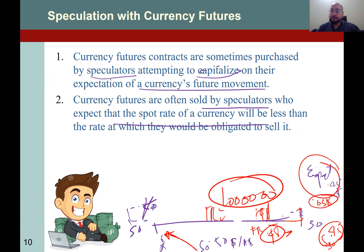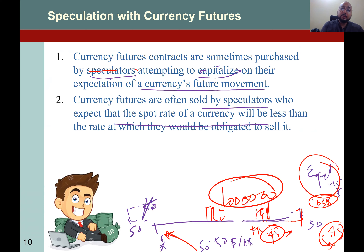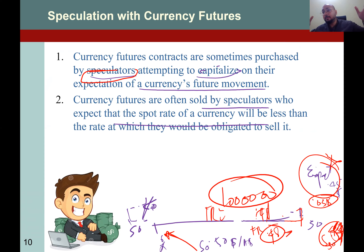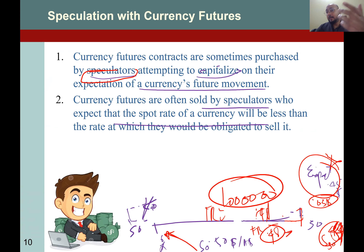It depends on your motive — whether you want to manage your risk or play with the risk. Speculators believe in high risk, high return. But what if their calculation or expectation goes wrong and the spot rate turns out to be 0.54? Then they will lose, because they promised to sell at 0.48 but the market value is 0.54 — they buy at a higher price and sell at a lower price, earning a huge loss. That's why it's high risk, high return — and high risk, high loss as well.